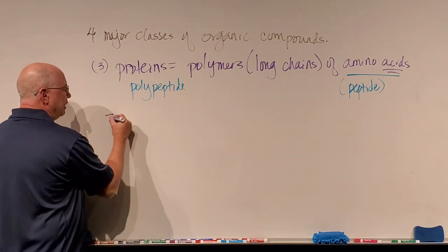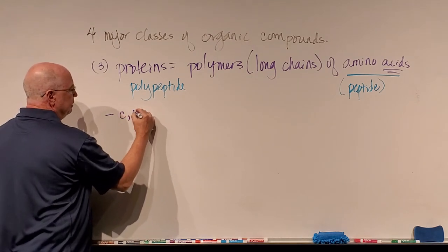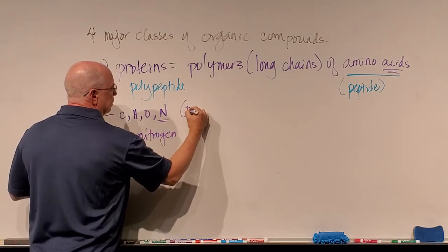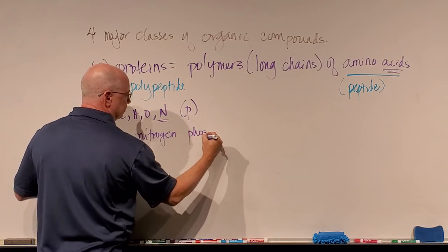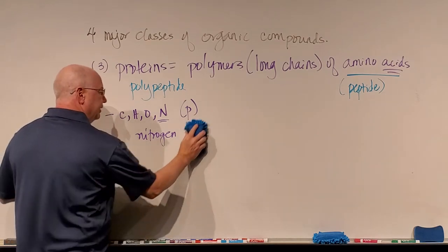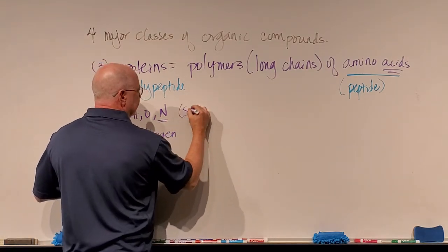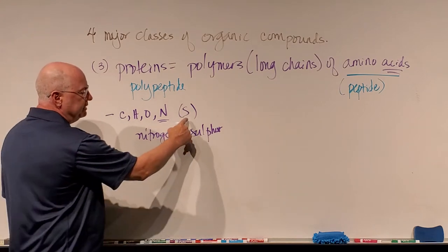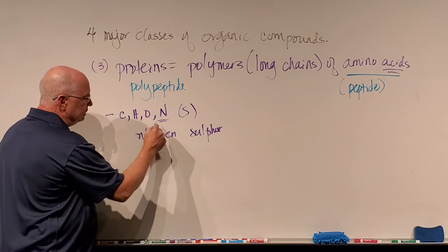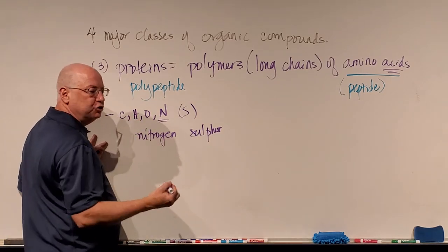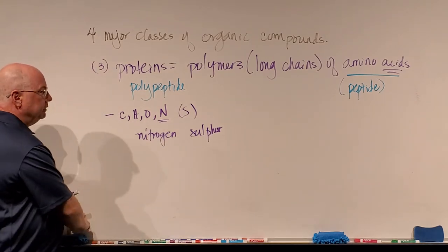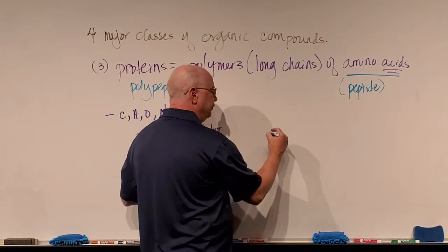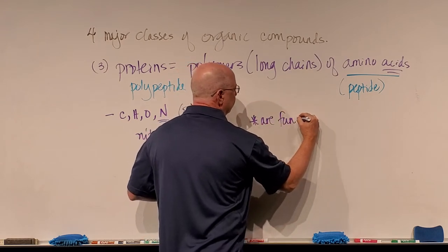Which atoms are found in all amino acids and proteins? Carbon, hydrogen, oxygen, and nitrogen. There are also two amino acids that have some sulfur, so sulfur appears in parentheses — but all amino acids have at least carbon, hydrogen, oxygen, and nitrogen. Now, the function of proteins: proteins are the functional molecules of our cells. If there's some function performed inside the cell, it's usually performed by a protein.